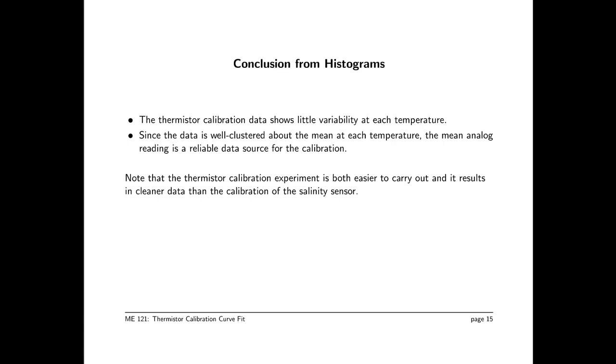The calibration data all looks good because there's little variability. And since there's little variability, we're going to use the mean of the analog input readings at each temperature as the variable, as the quantity used in our curve fits. So taking a step back and thinking about the salinity sensor, we note that the thermistor calibration experiment is both easier to execute, is easier to carry out, and the results are cleaner in general than the calibration of the salinity sensor. This concludes the first phase of our data analysis. We've confirmed using histograms that the data is all good, and we can use the mean of each column of our calibration data for a curve fit, which will be the second part of our analysis.